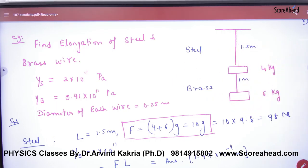Diameter of each wire is the same. What will be done? Elongation will be done. Delta L will be done with both wires.